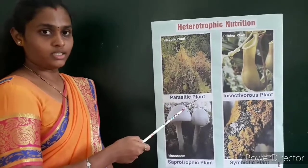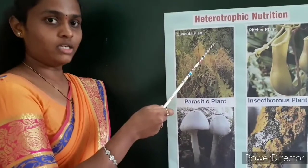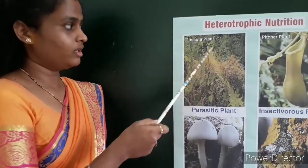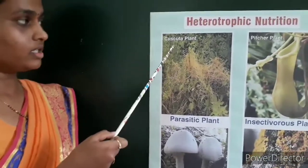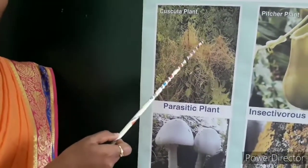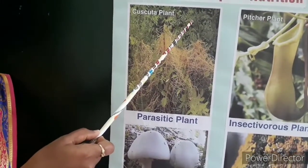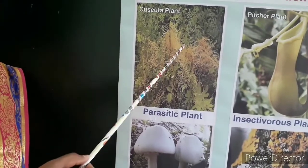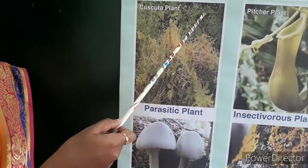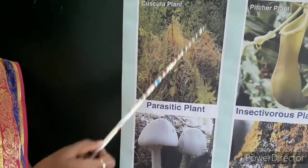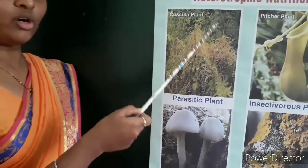Parasitic plants are the plants which grow on other plants for their food. The example is the cuscuta plant. Here you can see in the diagram the cuscuta plant, which is a yellow wire plant that grows on other plants for their food. The plant on which the cuscuta grows we call that the host. It takes food, water, and minerals from the host.